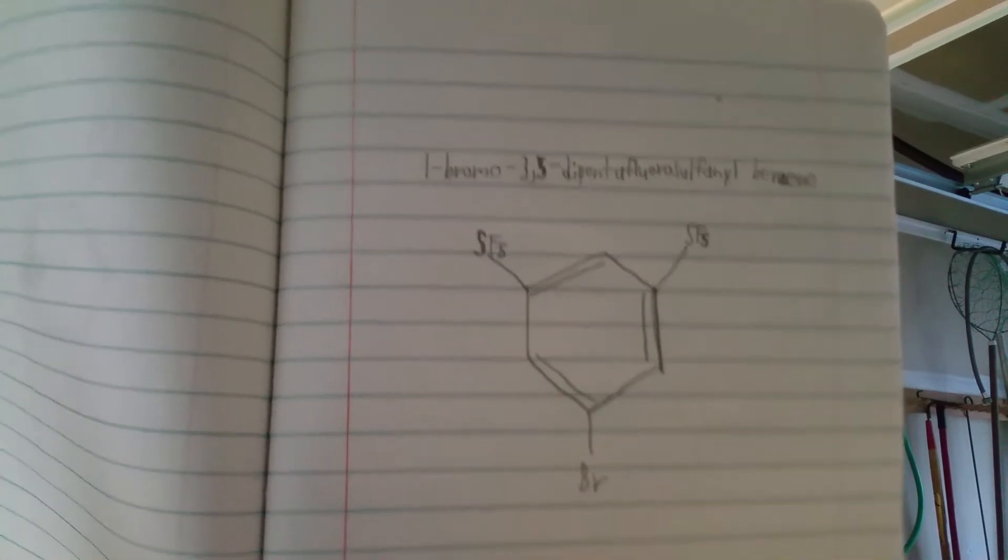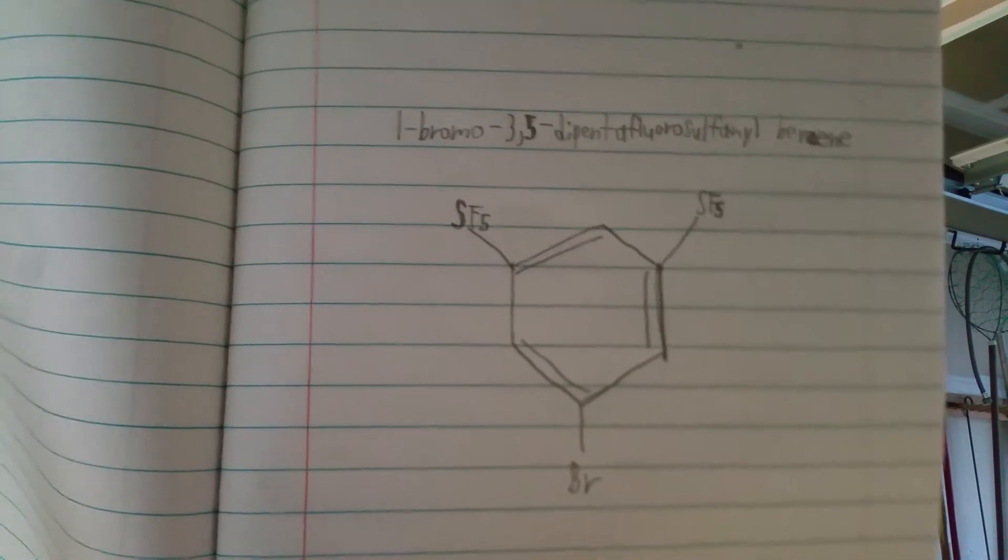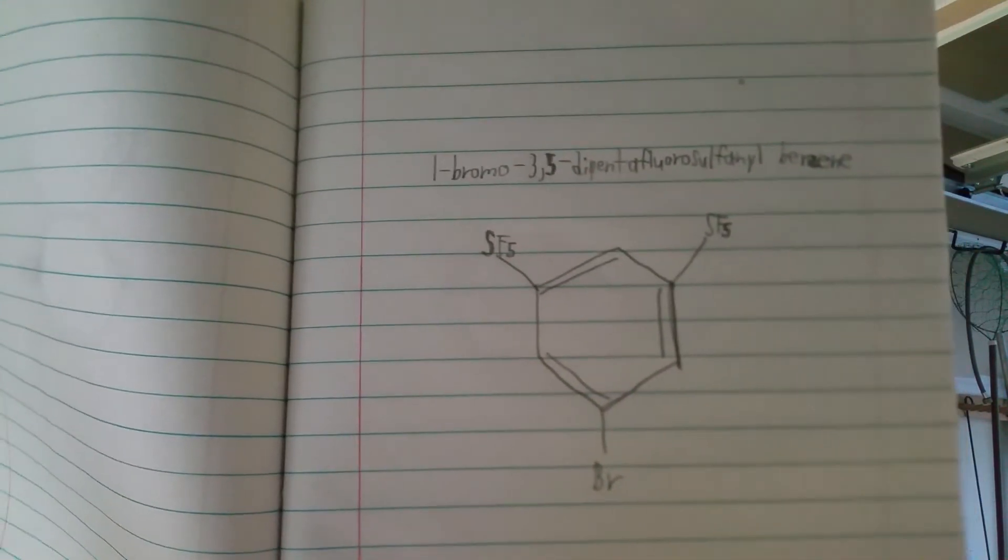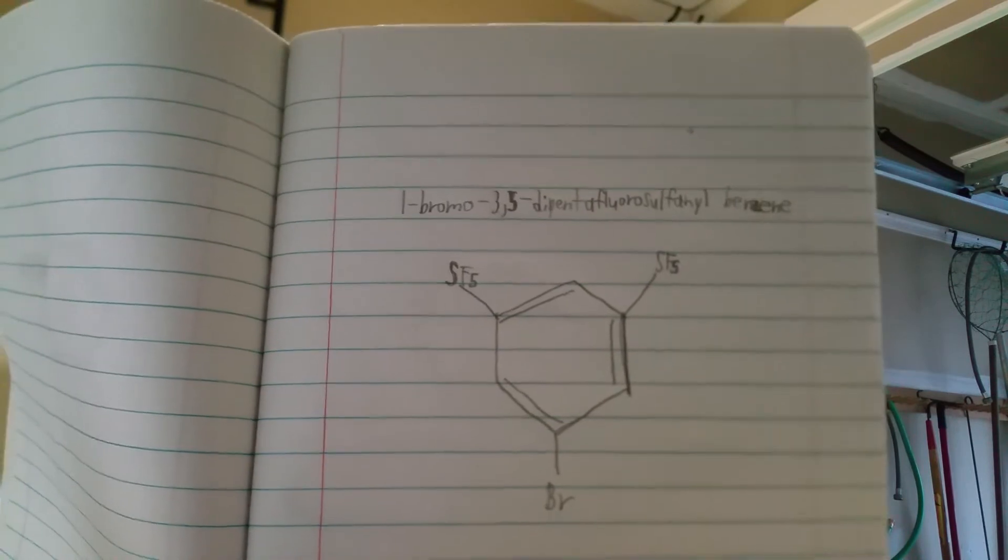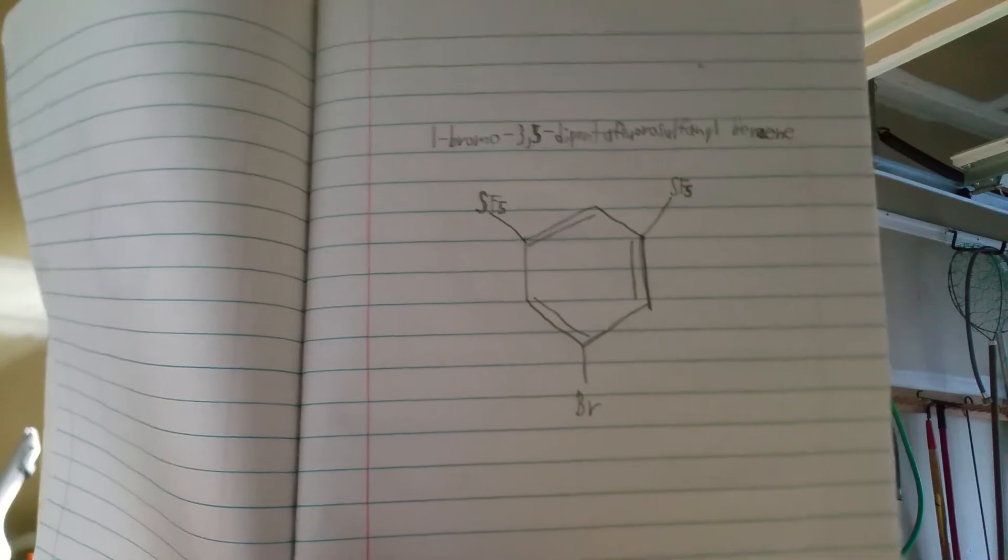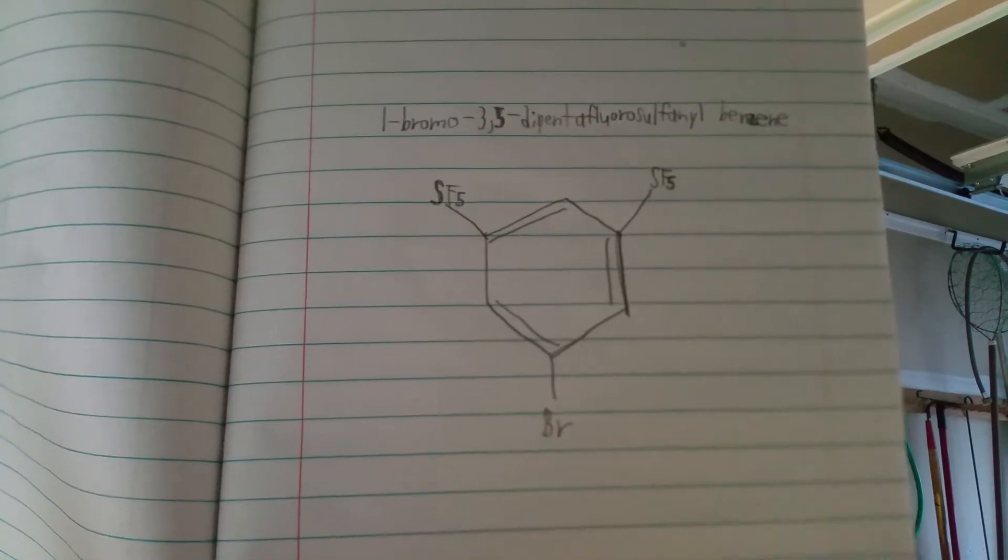We're making 1-bromo-3,5-dipentafluorosulfenyl benzene. The precursor involves a lot of really fun experimental work—making nasty smelling thiols, bubbling chlorine through solution, even using fluoropolymer glassware to prevent the resulting HF from eating through the labware.